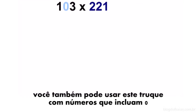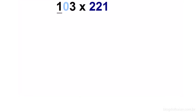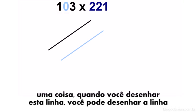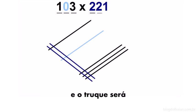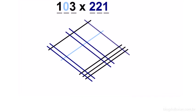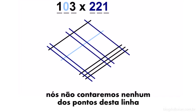You can even use this trick when a number includes zero. But one thing, when you draw this line, you should still draw the line, but put it in a different color or a different marking. And the trick will be that we don't count any of the dots for that line.